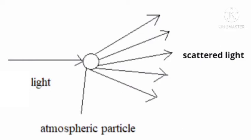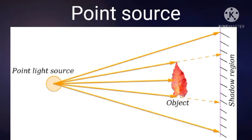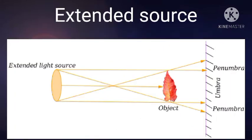Now let's understand the extended source and point source of light. The first is the point source: when light emerges through a small gap, we call it a point source. For example, if we put a hole in a cardboard and light passes through it, it is a point source. The second is the extended source — an LED bulb, CFL bulb, or the sun are examples of extended sources of light.